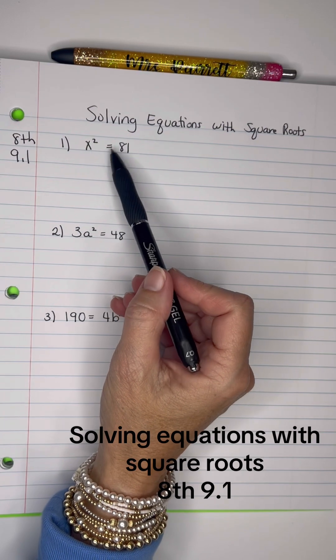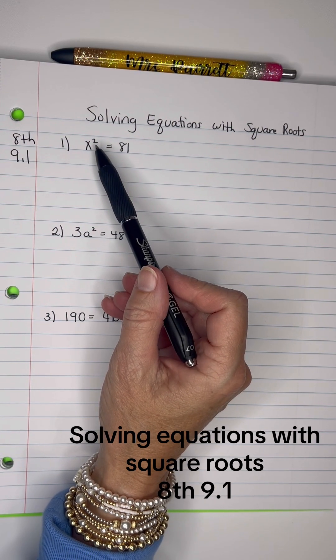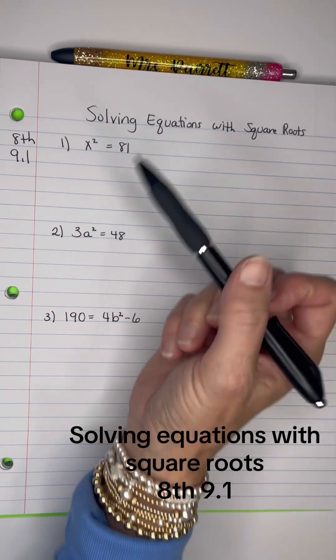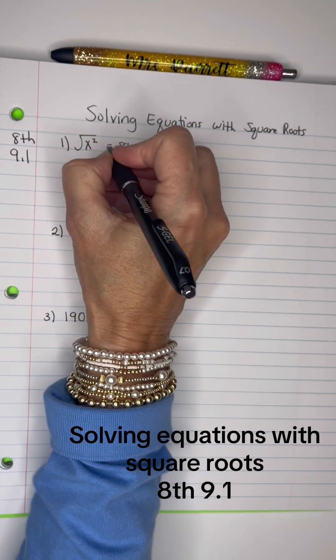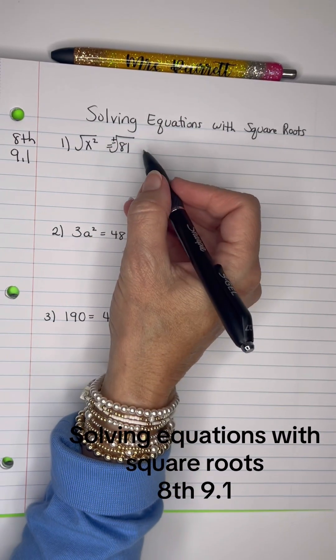So here we have x squared equals 81, and we want to isolate the x and get it away from the square. So the opposite of square is square root. So you're going to take the square root of both sides, and keep in mind there's going to be a positive and a negative answer that would be the square root of 81.